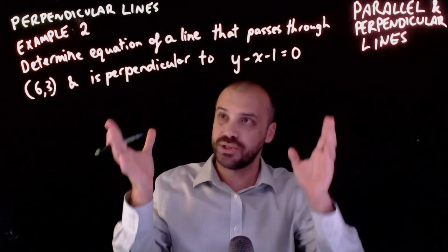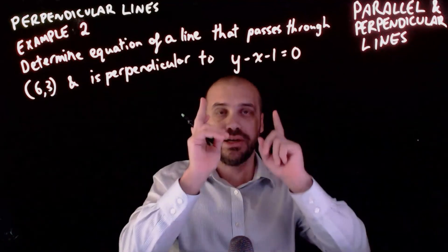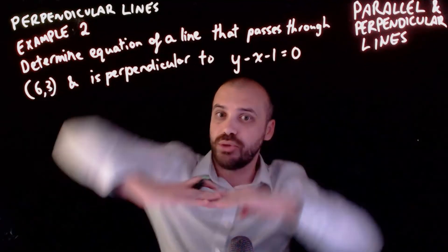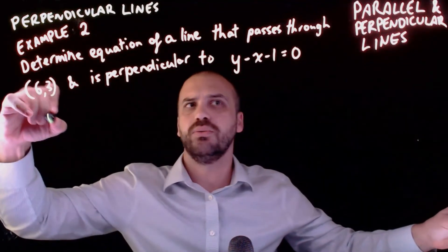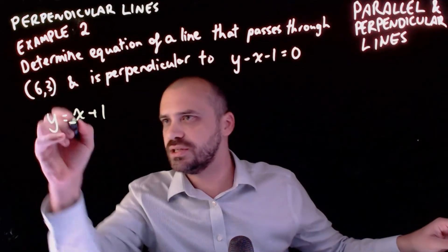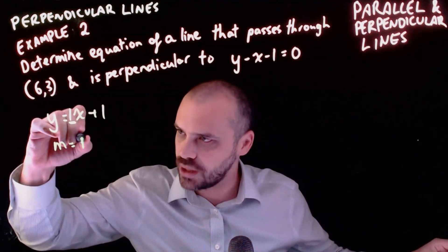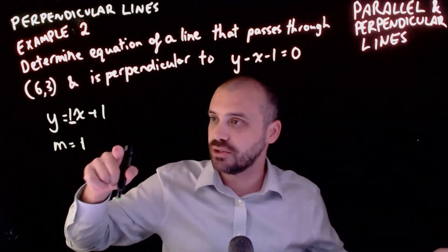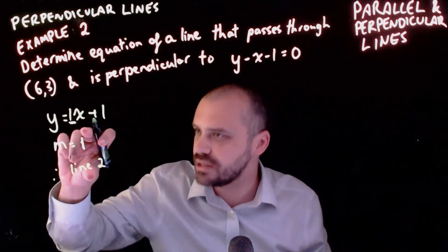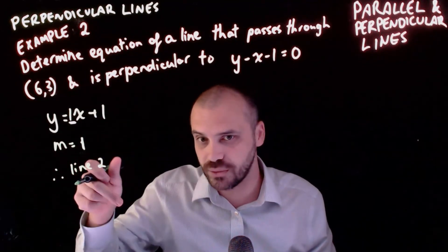Determine the equation of a line that passes through a given point and is perpendicular to a given equation. I need the gradient of that equation. Rearranging gives y equals x plus 1 - the gradient is 1, even though we don't write it there. So m equals 1, which means the perpendicular line will have a negative reciprocal gradient. 1 is 1/1, so the negative reciprocal is negative 1. Line 2 has gradient M2 equals negative 1.